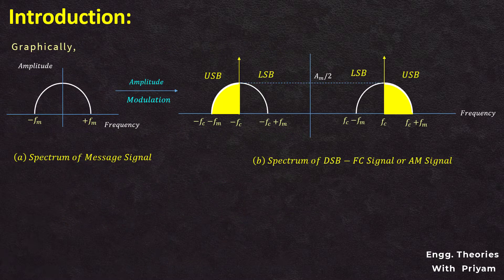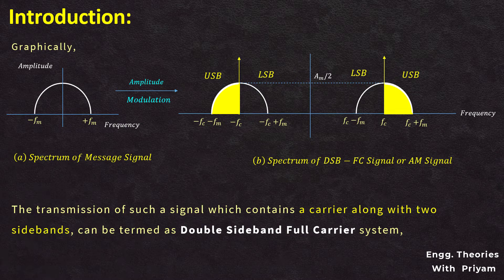When you modulate the carrier signal according to the message signal, we get an amplitude modulated signal which has two sidebands and a carrier signal on both sides. The message signal is shifted to the frequency FC in the negative and positive side, and the amplitude of the shifted signal is reduced by 50%.